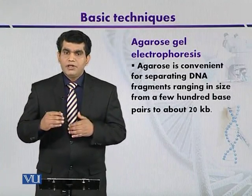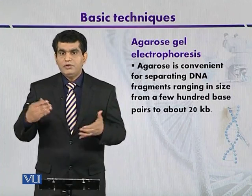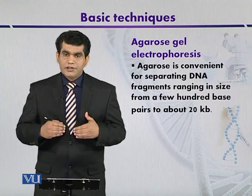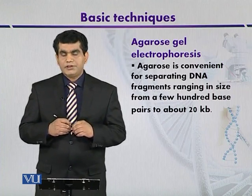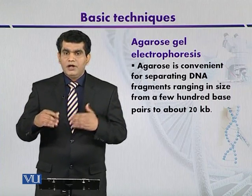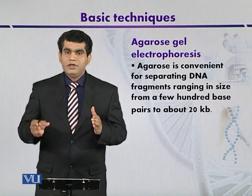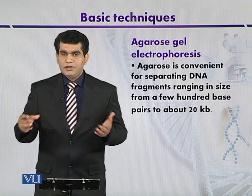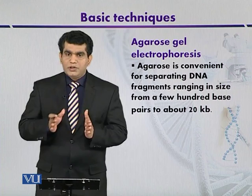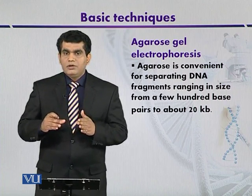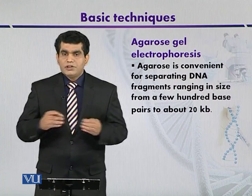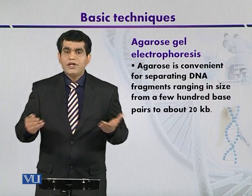After DNA isolation, we can analyze or visualize them by using gel electrophoresis. One type of gel electrophoresis is agarose gel electrophoresis. Agarose is very convenient for isolating DNA fragments ranging from a few hundred base pairs to 20 kilobase pairs. We can also isolate fragments from a few thousand base pairs.